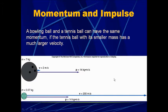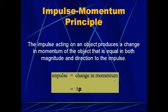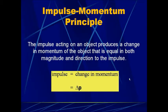So big mass with small speed can equal small mass with high speed in terms of momentum — keep that in mind. We also looked at the relationship between impulse and momentum. The impulse, which is force multiplied by time, is equal to the change in momentum — momentum now minus momentum initially. The momentum equation is mass times velocity.